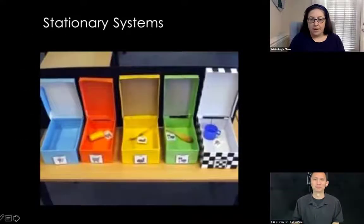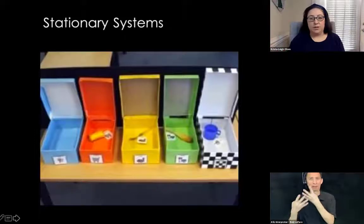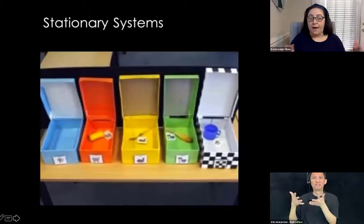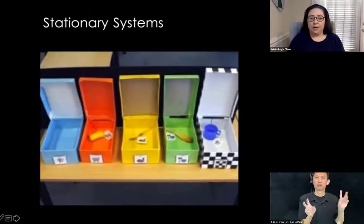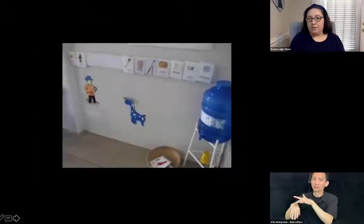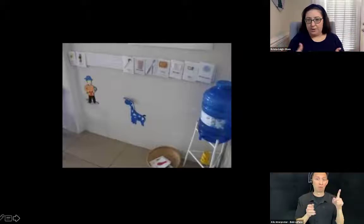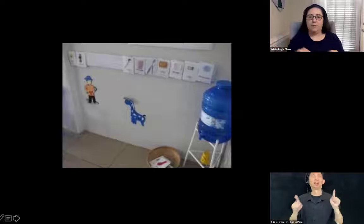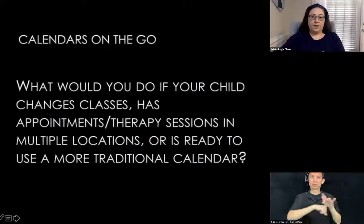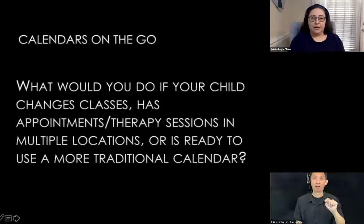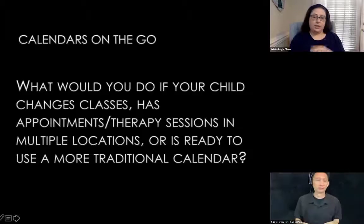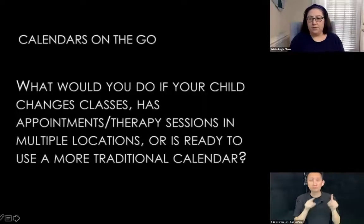Here's a stationary box calendar system — you can see the finished box on the right with a different visual feel. There's also an example of a wall system going left to right, hopefully at a height where the child can reach and manipulate the items. Then there are calendars on the go — these need to be in a smaller, more portable format. If a child is changing classes, has a lot of appointments, or goes to multiple locations, a portable system will be a lot easier for them to use.